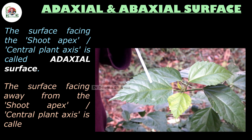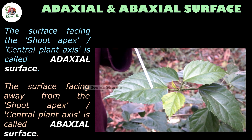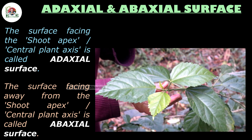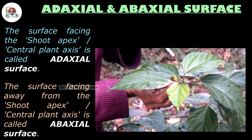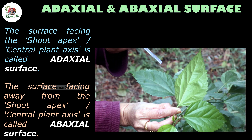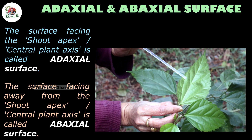The surface of the leaf that is facing away from the shoot apex is called the abaxial surface of the leaf.